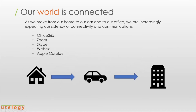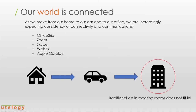Our world is now connected. We move from our home to our car to our office and expect a consistency of connectivity and communications. Examples of that are Office 365, Zoom, Skype, and very interestingly, Apple CarPlay. Apple takes the concept of the interface and your personal preferred UI moving with you from your home and phone to your car and to your office. Traditional AV and meeting room control — the Crestron or AMX control panel — really doesn't fit into that phone-app type of interface. Harman and Samsung are really pushing this sort of connectivity between home, car, and office.